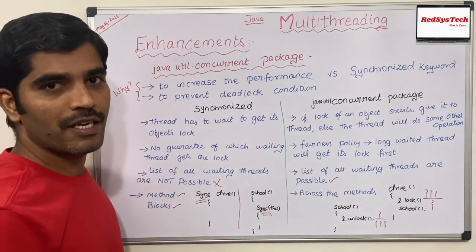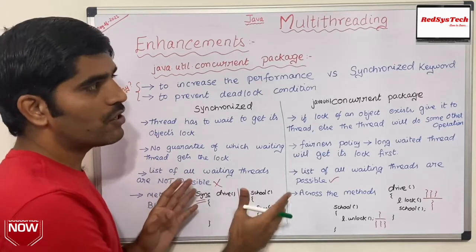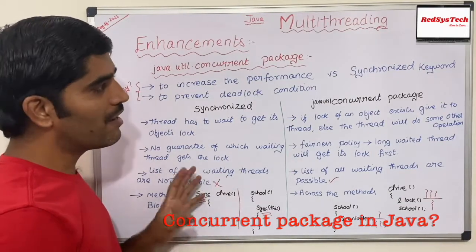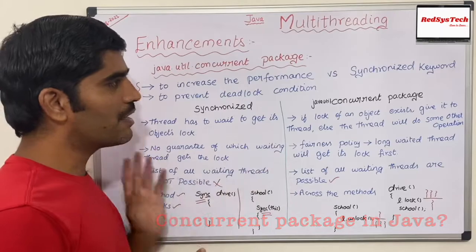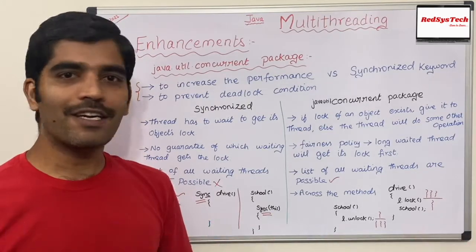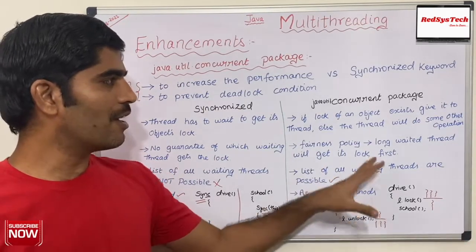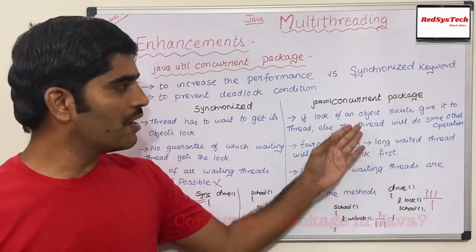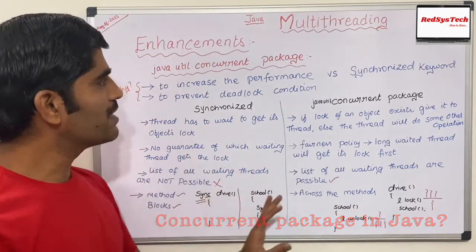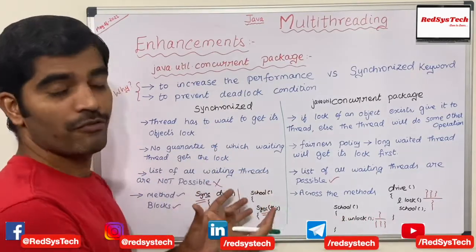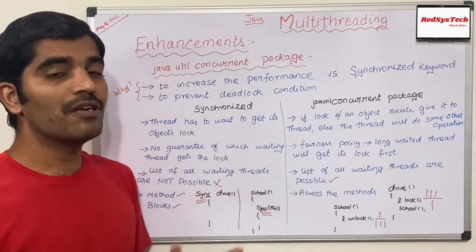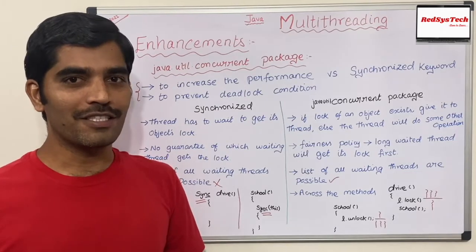There are multiple methods we are going to discuss in the next videos. Make sure that whenever someone wants you to implement multi-threading, don't directly write your program with the synchronized keyword — in real-time programming, that won't help performance-wise. Oracle developers created the concurrent package so you can use its classes and interfaces, which I'll cover in upcoming videos. I hope you guys have understood the concurrent package, which is very powerful for implementing multi-threading.